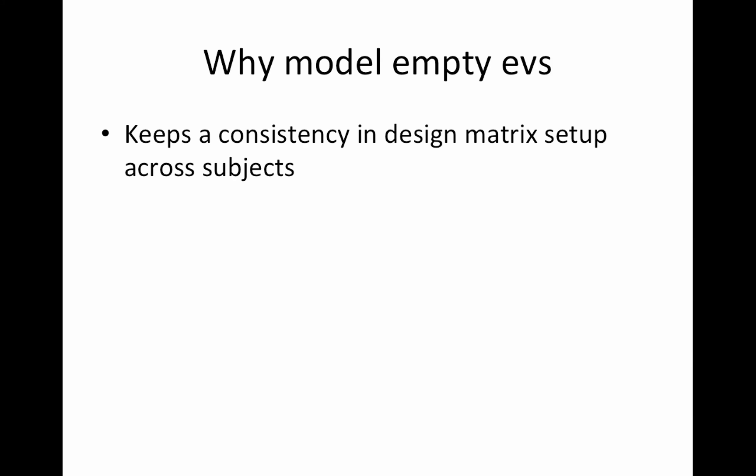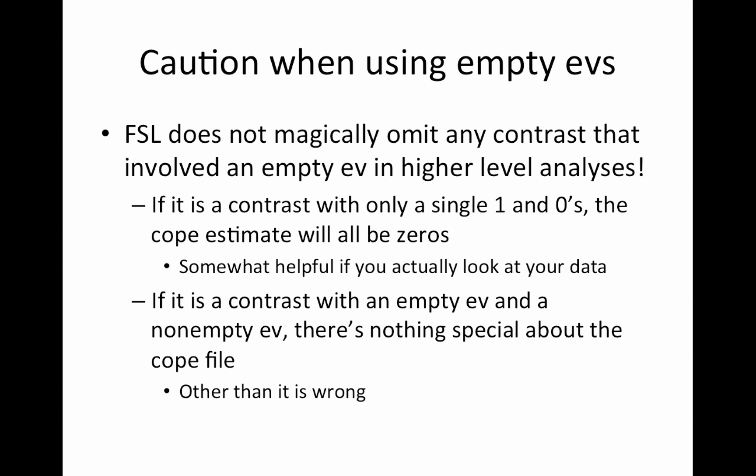Ultimately it does make some aspects of coding easier. The big caution with using empty EVs is that FSL doesn't magically notice when you have one. I've encountered people who think FSL just knows to skip empty EVs in higher-level analyses — in fact, it doesn't. What happens is, if you look at a COPE file — COPE stands for contrast of parameter estimates — the COPE image for an empty EV will just be all zeros. Zero doesn't mean nothing; zero is something. So if you did a contrast with that empty EV, it'll just subtract a zero instead of an actual contrast, which can give really misleading results.